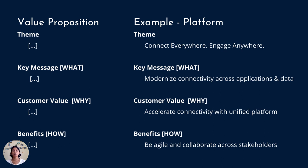For this example — the B2B SaaS platform — the theme is 'Connect Everywhere, Engage Anywhere.' The key message, your what, is 'modernize connectivity across applications and data.' You can see the theme feeding into the key message. Your customer value, your why, is 'accelerate connectivity with a unified platform.' Benefits, your how, is 'be agile and collaborate across internal and external stakeholders.'